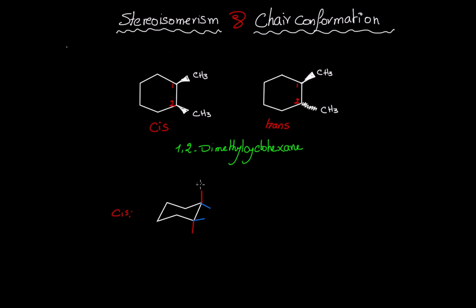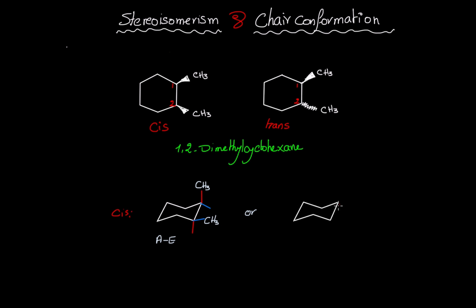So if I choose to place the CH₃ on an axial bond here — the axial is facing down and the equatorial is facing up — therefore on the second carbon the CH₃ has to be on an equatorial. So for cis 1,2-dimethylcyclohexane, it has to be axial-equatorial.